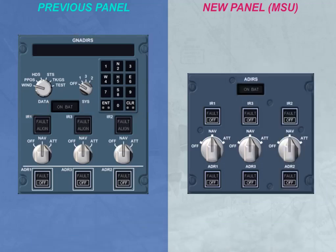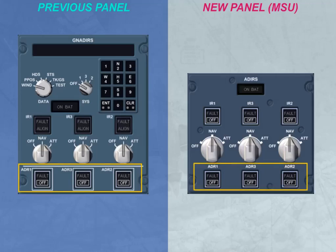The other noteworthy difference concerns the ADIRS disconnections. As with the previous panel, the ADR outputs can also be disconnected from the MSU. But from the MSU, you have the additional capability to independently disconnect the individual IR outputs.